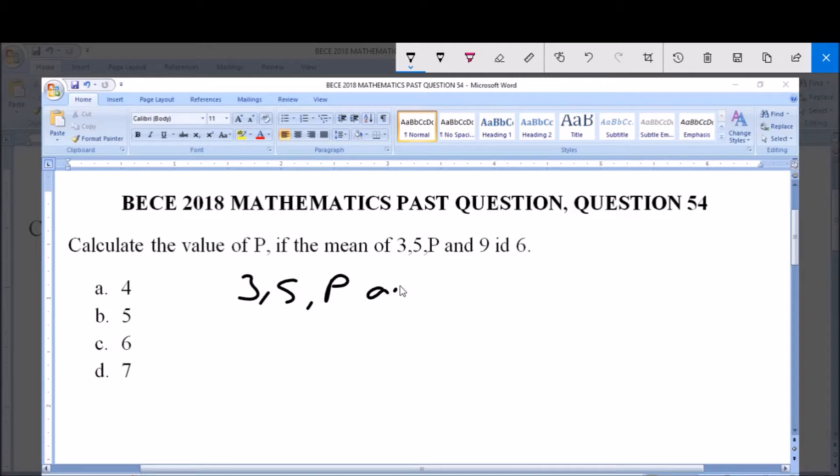The mean of these numbers is equal to 6, meaning the average of these numbers is 6. And we know that the formula for calculating mean, which is average, is equal to the sum of numbers divided by the total number of numbers.